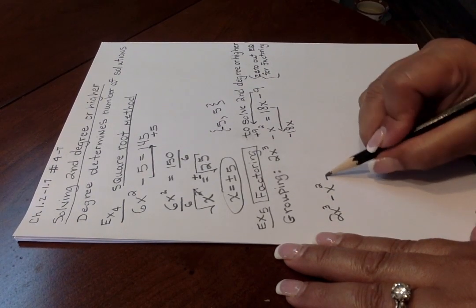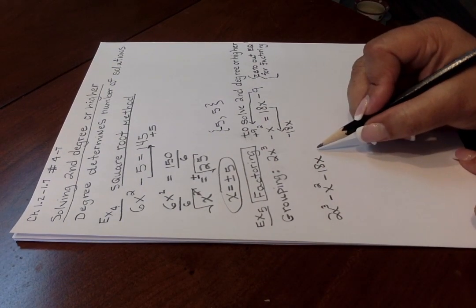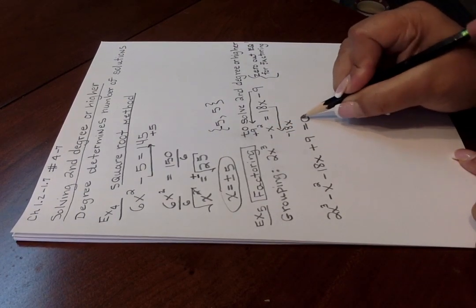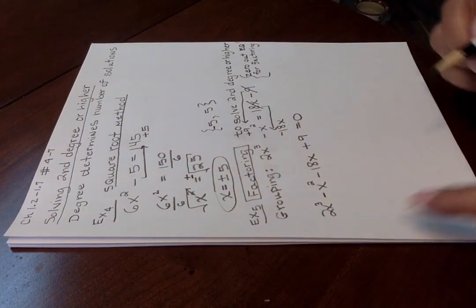you'll have 2x cubed. The negative x squared was already there, we moved the 18x over to the left, at which point we had negative 18x. We moved the negative 9 over, giving us positive 9, and that allowed us to zero out the right side. Okay, now you're ready for grouping.